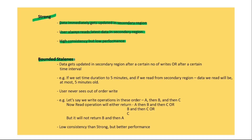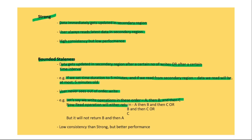With bounded staleness, data gets updated in the secondary region after a certain number of writes or after a certain time interval, based on configuration. For example, if we set the time duration to 5 minutes, the data read from the secondary region will be at most 5 minutes old. Also, the user never sees out-of-order writes. For example, if we write A, then B, then C, we will read either A→B→C, or B→C, or just C — but never B before A. It has lower consistency than strong but better performance.